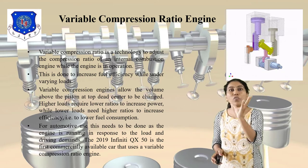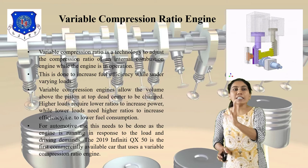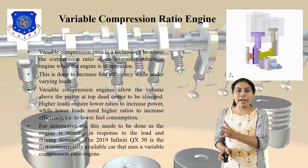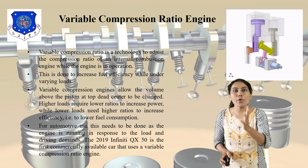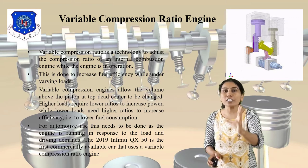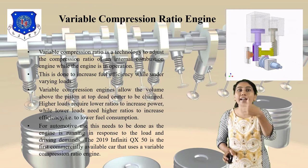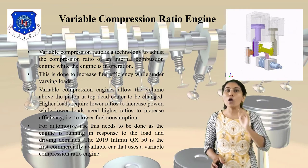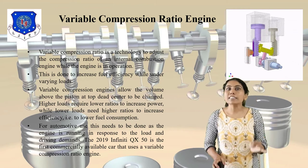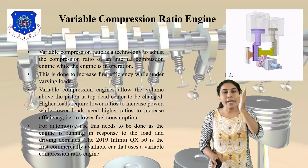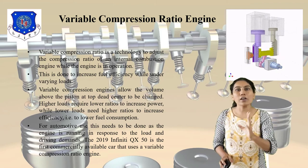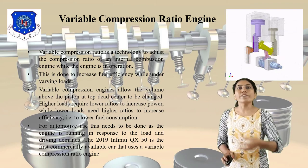This is done automatically as the engine is running in response to the load and driving demand. The 2019 Infiniti QX50 is the first commercially available car that uses a VCR engine — a Variable Compression Ratio engine. Today we discussed Non-Conventional IC Engine: the Stirling Engine, its working principle, main components, and then the VCR engine.